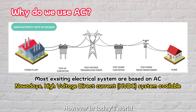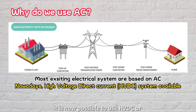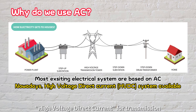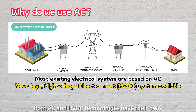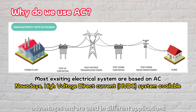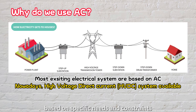However, in today's world, with the advancements in DC technology, it is now possible to use HVDC, or high-voltage direct current, for transmission. Both AC and HVDC technologies have their own advantages and are used in different applications based on specific needs and constraints.